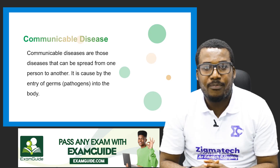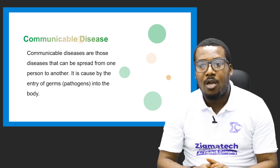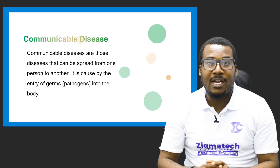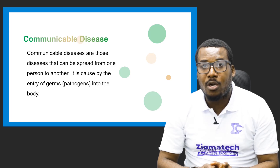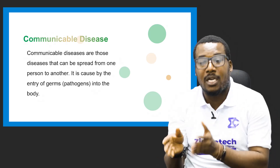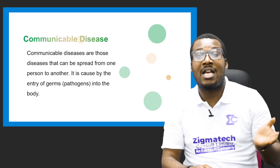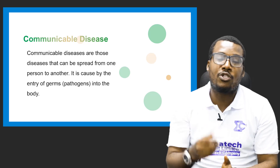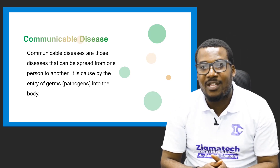Communicable diseases are those diseases that can be spread from one person to another. They are caused by the entry of germs — which are pathogens — into the body. This is not to be confused with non-communicable diseases. The word 'communicable' comes from 'communication' — it implies close proximity, a disease passed through contact or proximity with another person.